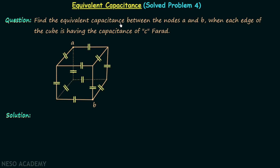Find the equivalent capacitance between the nodes A and B when each edge of the cube has a capacitance of C Farads. We have one cubic skeleton in which all 12 edges have a capacitance of C Farad — one capacitor added in each edge — and we are required to find out the equivalent capacitance between nodes A and B.